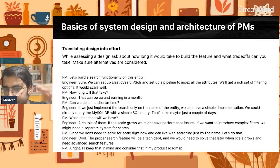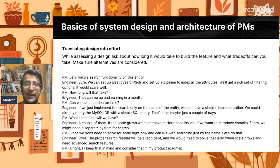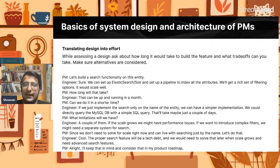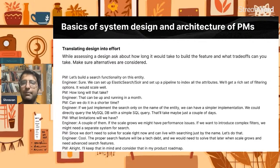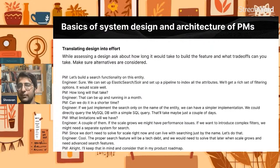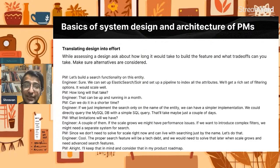The engineer says, we will implement a simple solution, but later it will be part of the tech debt — if tomorrow scale comes, we will face a problem. The PM says, fair enough, I will keep that in mind and consider that part of my product roadmap. So the conversation flow is: engineer proposes Elasticsearch, PM asks how long, engineer says a month, PM asks for a quicker option, engineer warns of a suboptimal solution, PM asks about limitations, engineer flags scaling issues and tech debt, PM accepts and adds it to the roadmap.